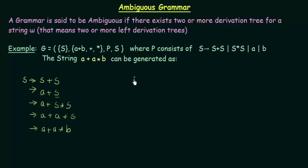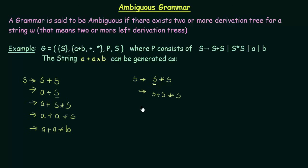Now let's find another way to generate this string. Starting again with S, this time I will use the production S → S*S. This is again a left derivation, so we start with the leftmost symbol. I replace this S with S plus S (using S → S plus S), giving S plus S*S. Then I replace the leftmost S with A, giving A plus S*S.